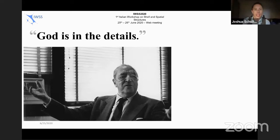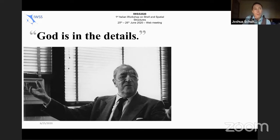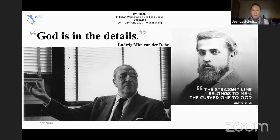Since this is a church roof, I thought it would be fitting to note that when designing with shells, the overall geometry seems to be what draws people. But as Mies said, God is in the details. The overall geometry was relatively straightforward, and now we're dealing with the details of the pre-stressing in both the shell and the slab. Since this is a shell and spatial structures conference, I'll quote my favorite engineer, Gaudi: 'The straight line belongs to men, but the curved one to God.'